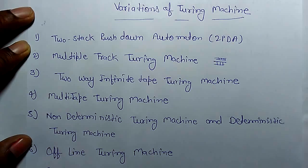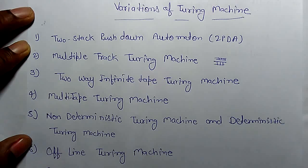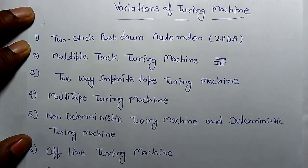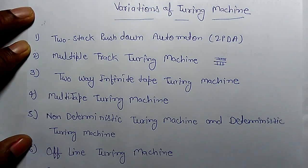There is also a two-way infinite Turing machine. We have learnt the single-way infinite Turing machine. Similarly, there is a 2-way infinite Turing machine, and from it we can derive another single-way infinite Turing machine.